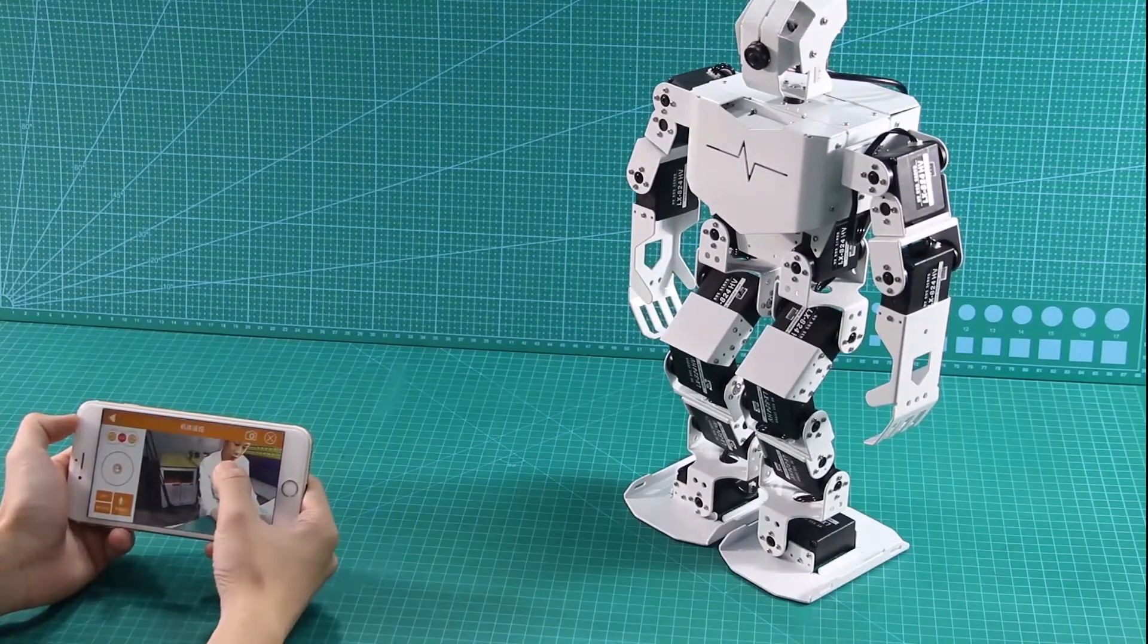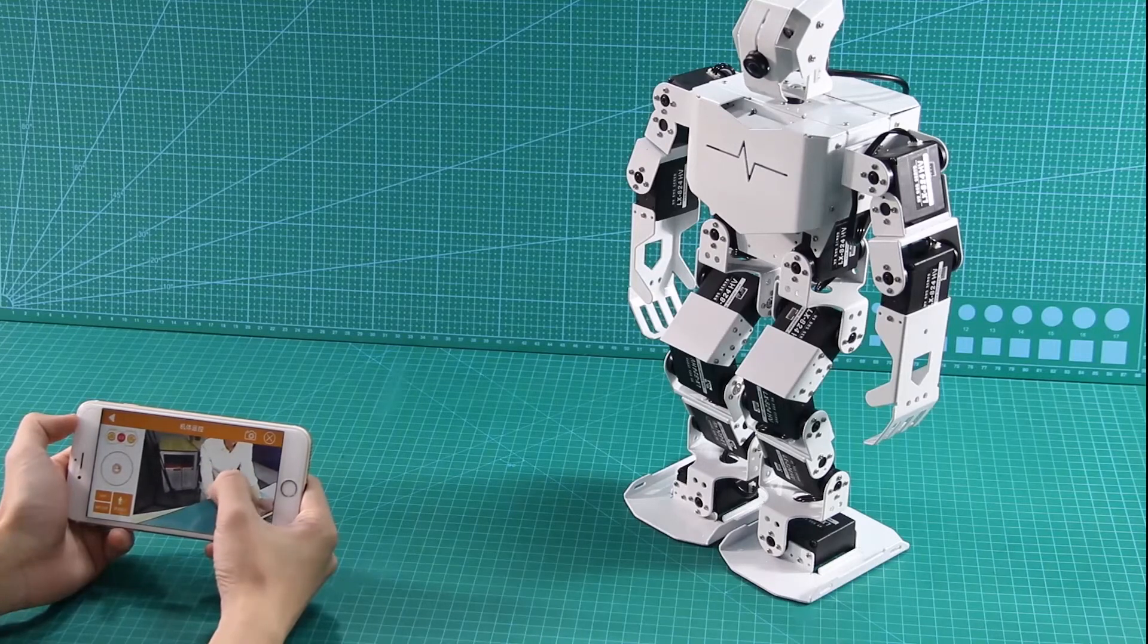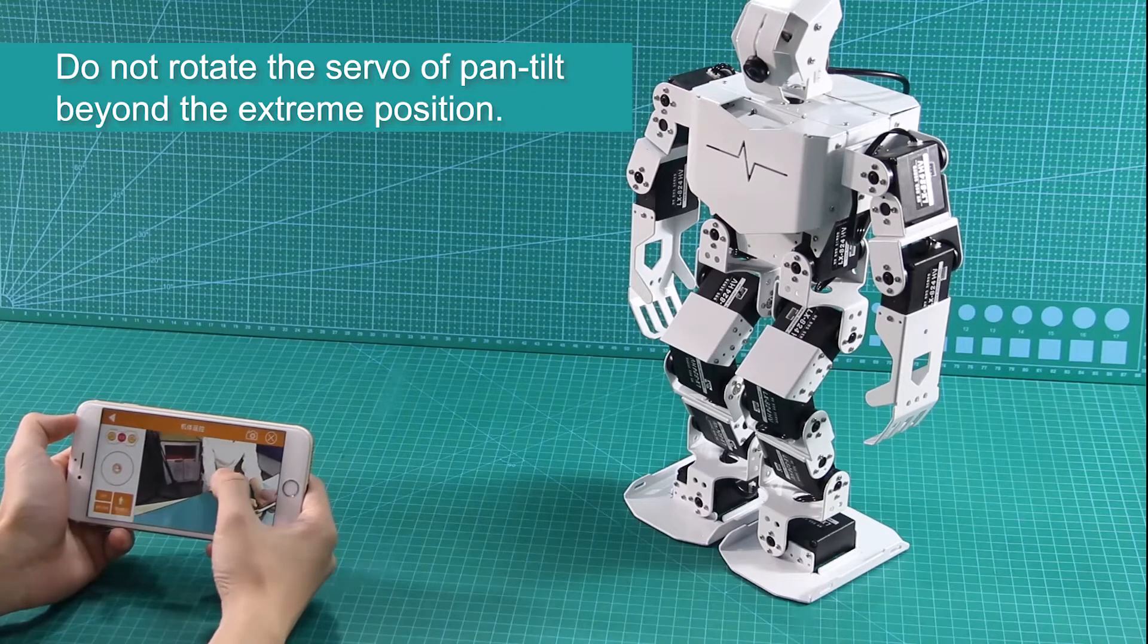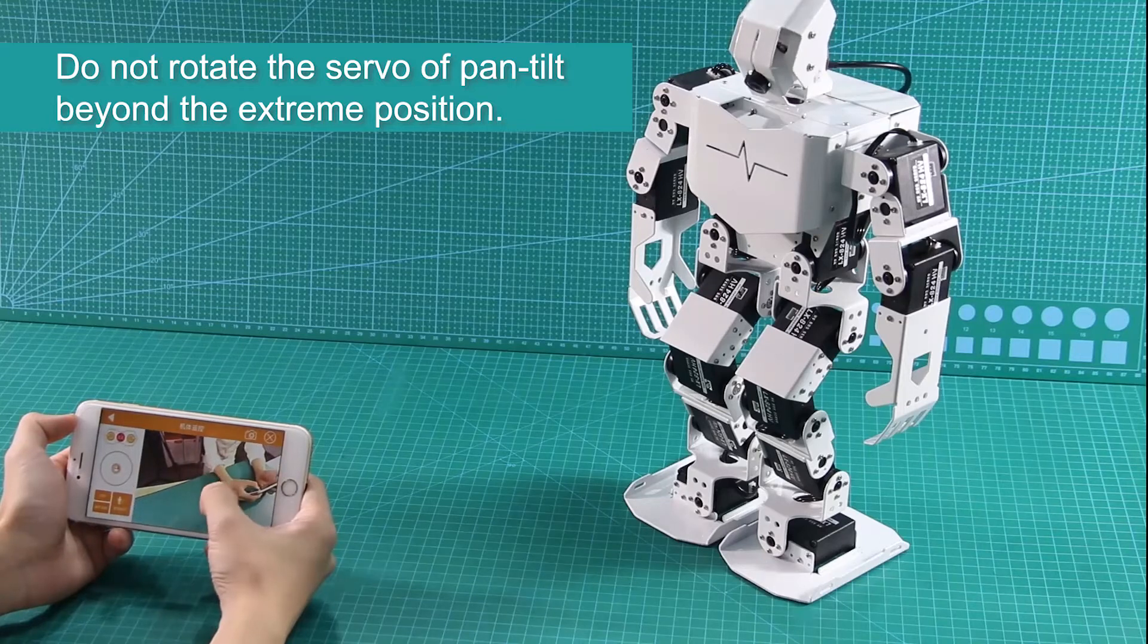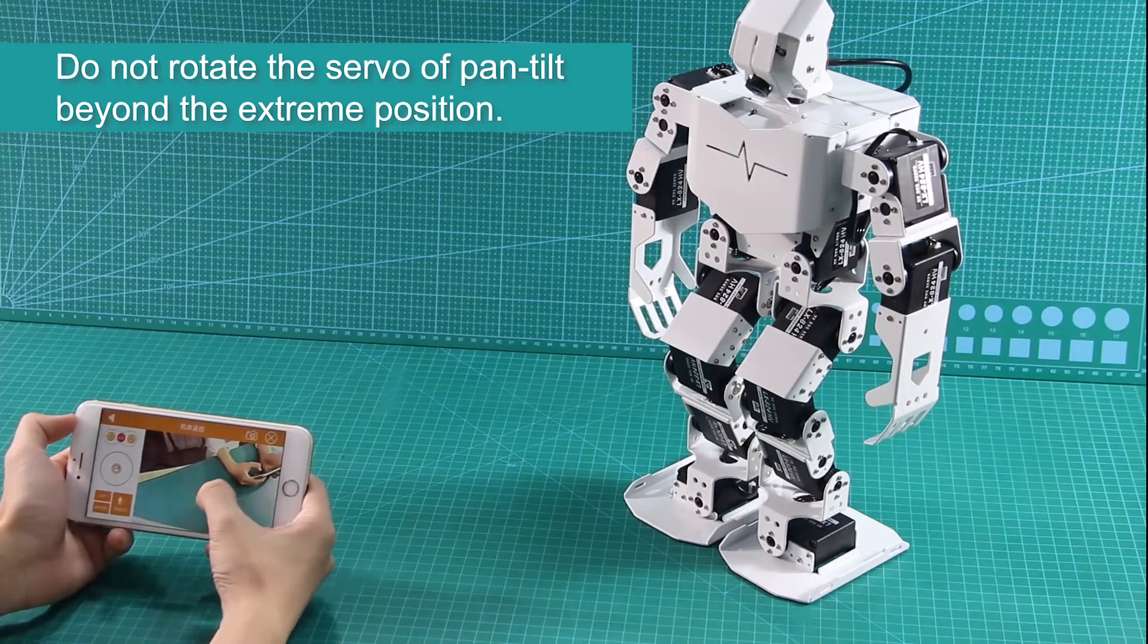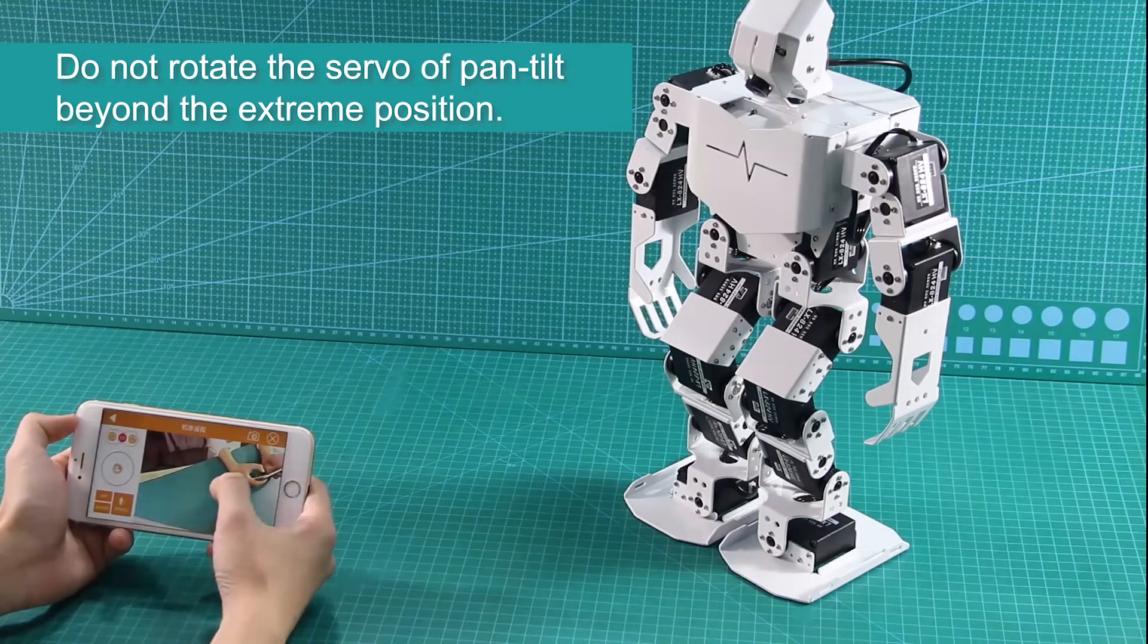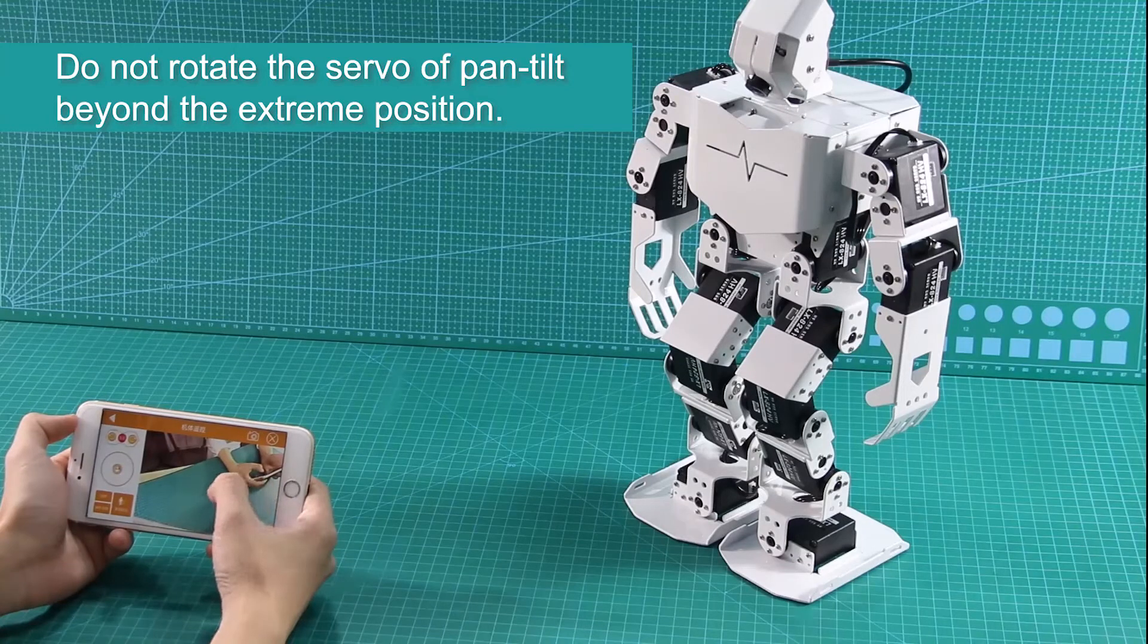Please note that the camera head servo has limit protection. After turning to the extreme position, sliding the screen again will give vibration feedback. Do not continue to turn for servo protection.